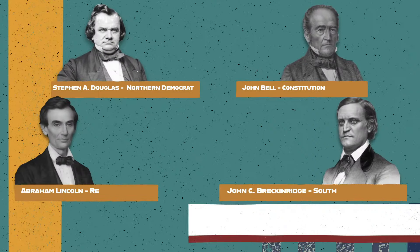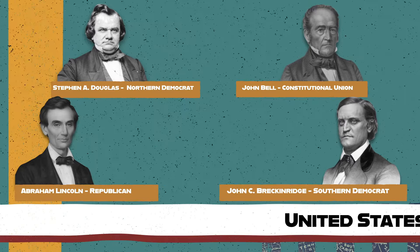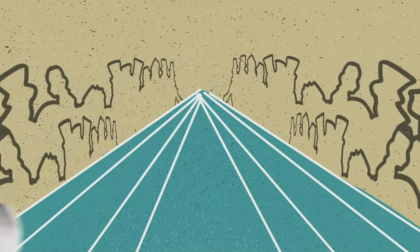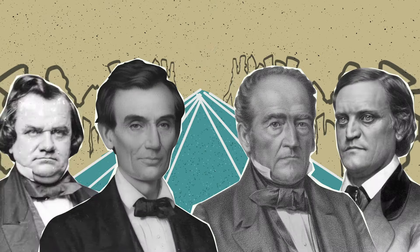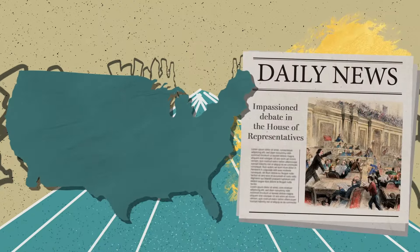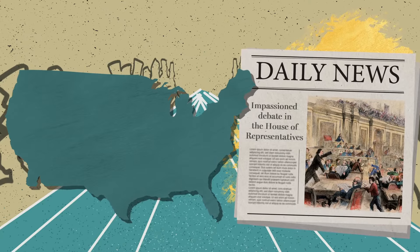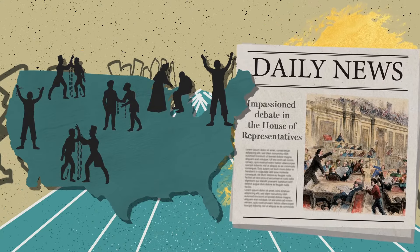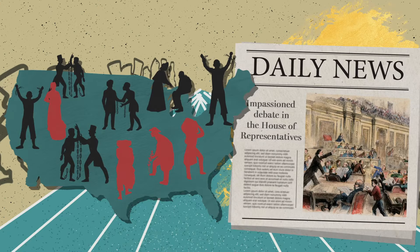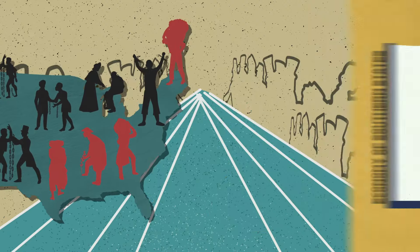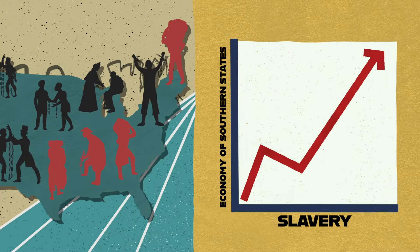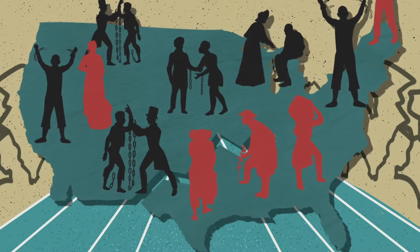In 1860, the United States presidential election was more than a political competition — it was a high-stakes game for the future of the country. The issue of slavery was highly political. While abolitionists across the country opposed the practice, many thought it should continue, particularly in the South, where slavery was integral to the economy. This disagreement threatened to tear the nation apart.